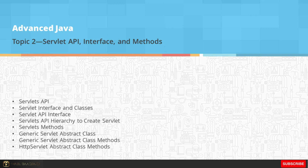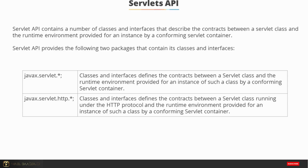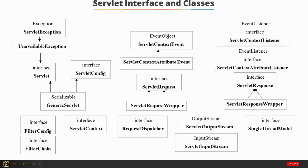Let's look at the servlet API interfaces and methods. The servlet API contains a number of classes and interfaces that describe the contracts between a servlet class and the runtime environment provided by a conforming servlet container. The servlet API provides two packages: javax.servlet, which defines contracts between a servlet and the runtime environment, and javax.servlet.http, which defines contracts between a servlet running under the HTTP protocol and its runtime environment.